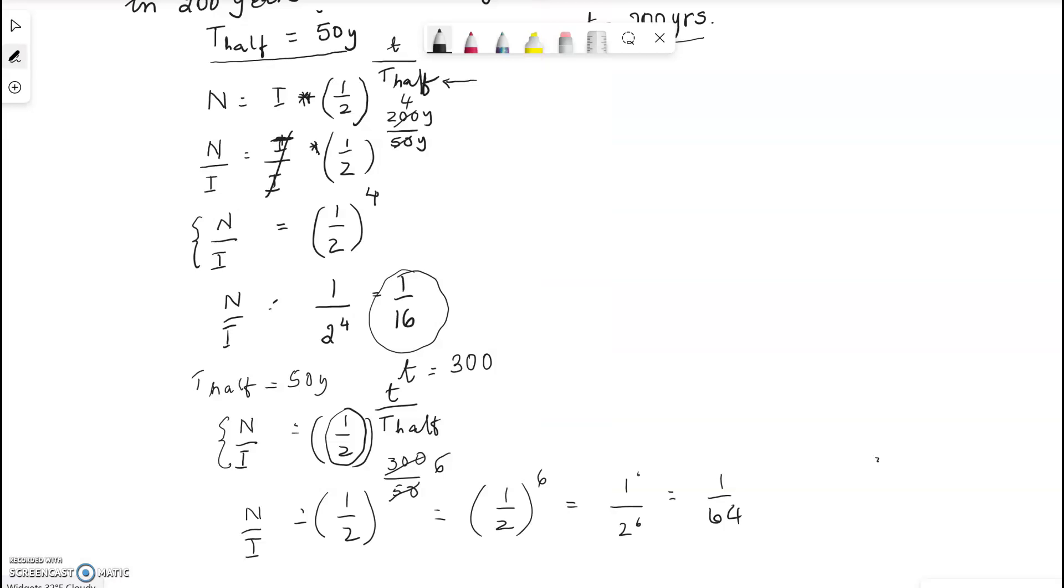So what I want you to notice is this. One-sixteenth of it was left. It was a tiny fraction in 200 years but look what happens in 300 years. It's exponential decrease. Only one sixty-fourth of it is left over.